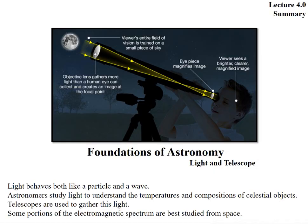To summarize the today's class on light and telescope, I can say that light behaves both like a particle and a wave. Astronomers study light to understand the temperatures and the composition of celestial objects. Telescopes are used to gather this light. Some portion of the electromagnetic spectra are best studied from space.